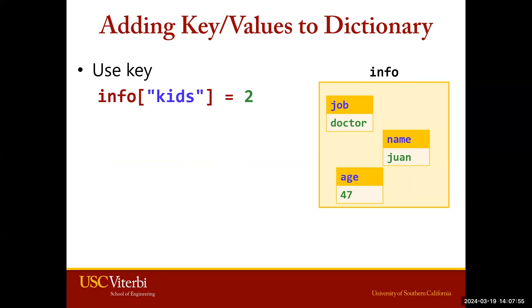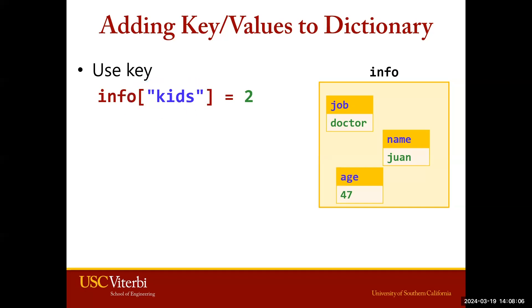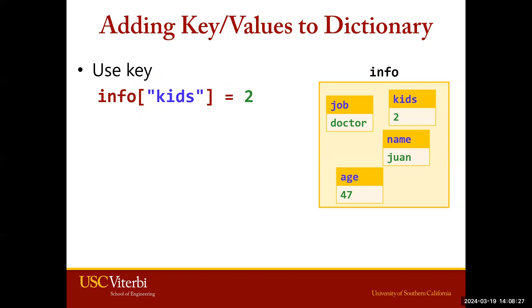We've looked at different ways of reading a dictionary, but maybe after creating a dictionary we want to add to it. We can do that by calling our dictionary, then within the brackets giving a new and unique key and setting that equal to our value. Remember, this key should be unique from any of the existing keys. Running this, we'll see that our key-value pair kids-2 has been added to our info dictionary.